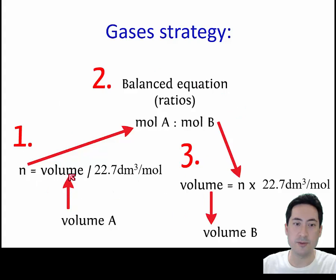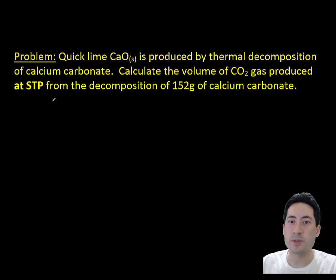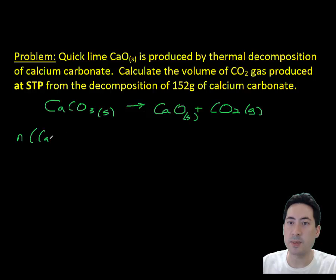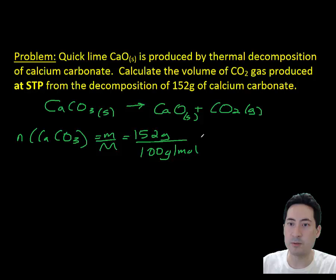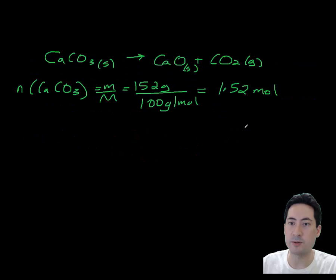For the strategy, if you're starting with volumes, you'll do conversion to moles, use the mole ratio, then convert back to volume. Here is a problem: quicklime is produced by decomposition. Tell me the volume of CO₂ gas given 152 grams of calcium carbonate. You do the balanced equation, it's all one molar. 152 grams gives us 1.52 moles, which means we have 1.52 moles of carbon dioxide.